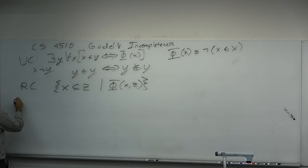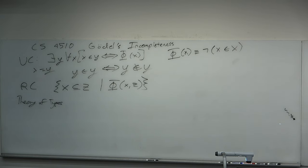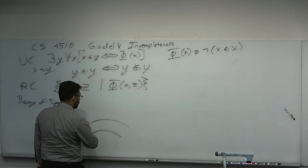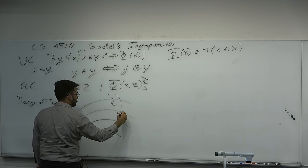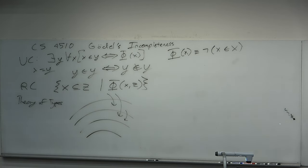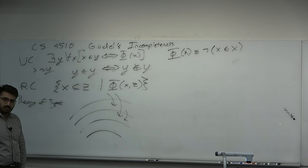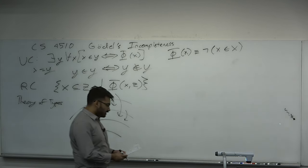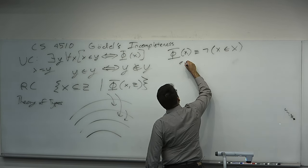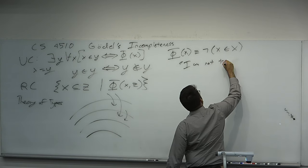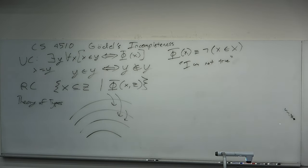Another thing Russell did was the theory of types. He wrote a book called Principia Mathematica, went off with Whitehead, and spent the next 20 years trying to formalize mathematics rigorously using the theory of types. Everything has a type, and objects may only refer to types less than their own. This on the surface appears to prevent self-reference — if an object may only discuss those of a lesser type, no object may discuss its own semantic properties, making it seemingly impossible to construct self-referential statements like 'I am not true,' which is essentially what Russell's paradox entailed.